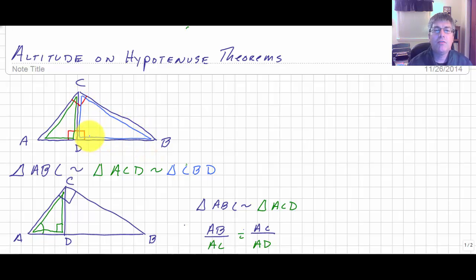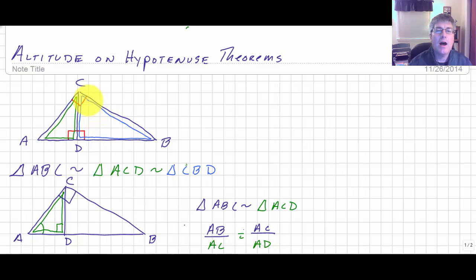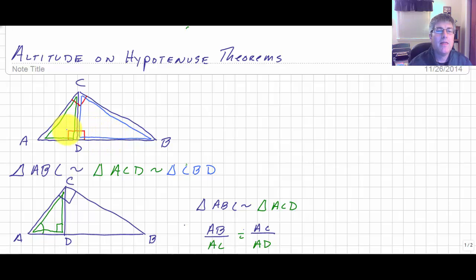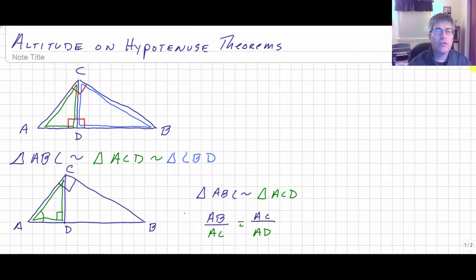You only need angle-angle to prove triangles similar. All three of these have a right angle. The green triangle and the large one both share angle A, and the right-side triangle and the big one both share angle B. So they're similar by angle-angle, and by the transitive property the green triangle must be similar to the blue one.